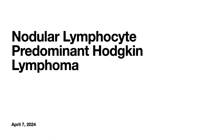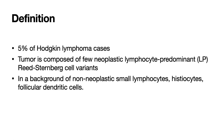Nodular lymphocyte predominant Hodgkin lymphoma accounts for approximately 5% of cases of Hodgkin lymphoma. It commonly presents with localized peripheral lymphadenopathy and generally follows an indolent clinical course with frequent late relapses.